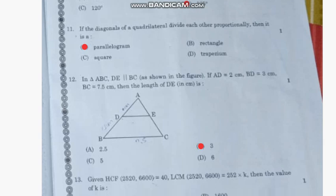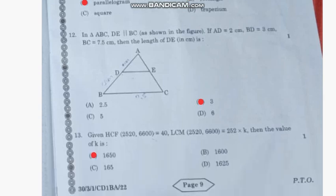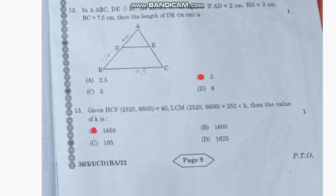Question number 12: In triangle ABC, DE is parallel to BC as shown in the figure. If DE = 2 cm, BD = 3 cm, and BC = 7.5 cm, then the length of DE in centimeters is—the correct answer is option B, 3.